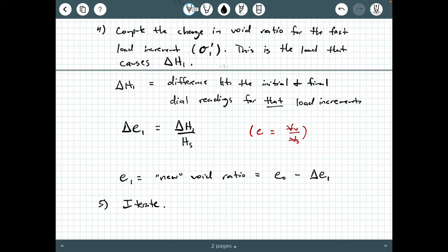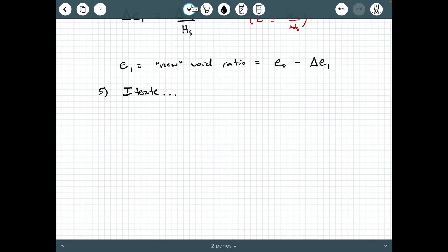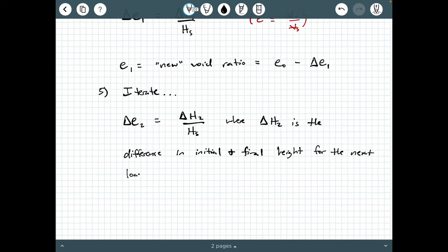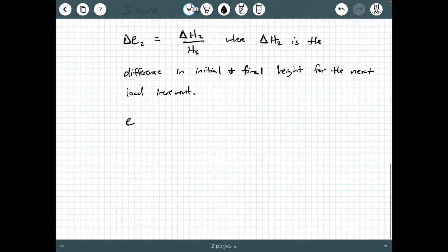Step five is an iteration step. We're going to say delta E2 equals delta H2 divided by H sub S, where delta H2 is the difference in initial and final height for the next load increment. And then E2 equals E1 minus delta E2.